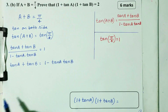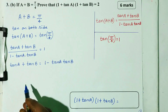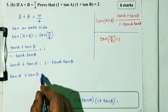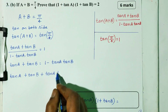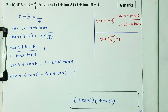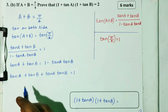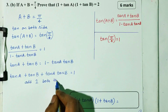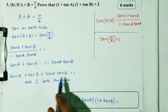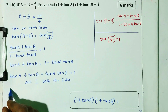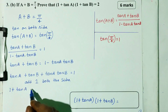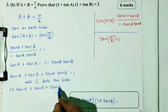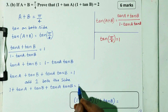Next step. Tan A plus tan B is equal to 1 minus tan A tan B. So, tan A plus tan B plus tan A tan B equals 1. Add 1 to both sides. Left-hand side: 1 plus tan A plus tan B plus tan A tan B equals 1 plus 1, which equals 2.